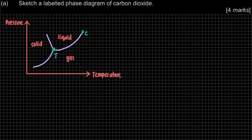How about the unit? Since the question does not give any values, it is fine to just label pressure and temperature. If the question did give us values, then we would need to include the values and units. In this case, there are no values given, so this is our sketch of the phase diagram of carbon dioxide. That is it for question A.